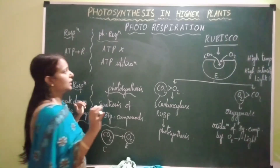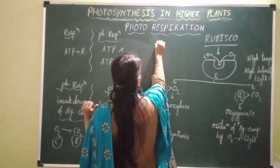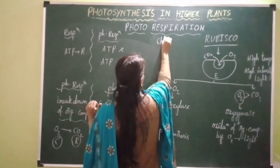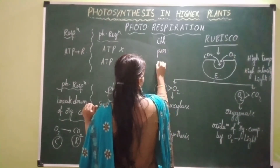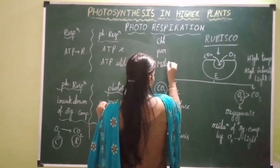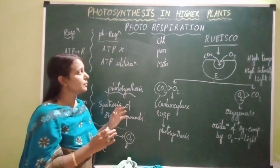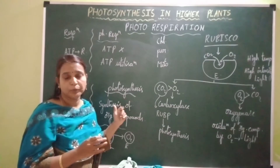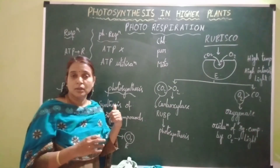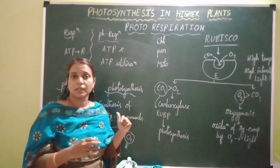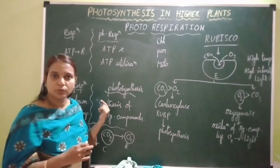Photorespiration occurs in cooperation between three organelles: chloroplast, peroxisome, and mitochondrion. The ATP is utilized inside the chloroplast during the phosphorylation of glyceric acid into phosphoglyceric acid.